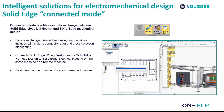Now we'll move on to what we call the connector mode. The connector mode is a fileless data exchange between Solid Edge electrical design and Solid Edge mechanical design. Data is exchanged interactively using the web-based service, which includes wiring data, connected data, and cross-section highlighting. This allows us to connect Solid Edge Wire and Harness Design and/or Solid Edge Harness Design to the electrical routing on the same machine or a remote machine, meaning designers can also be working remotely.